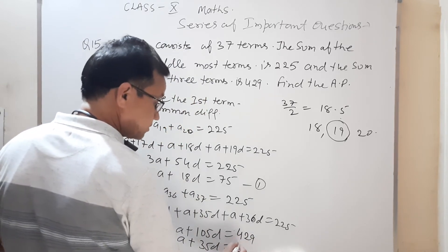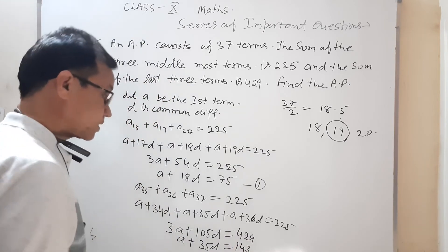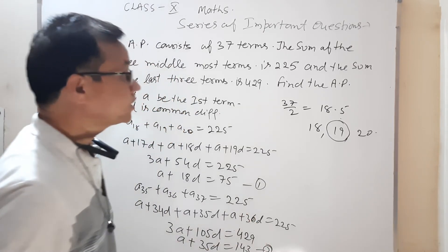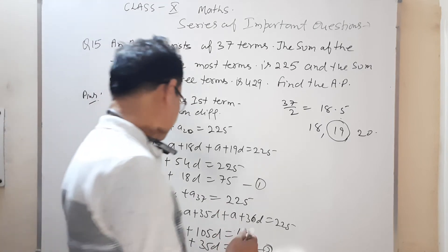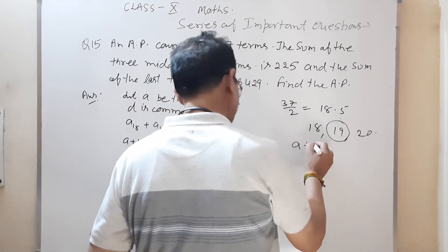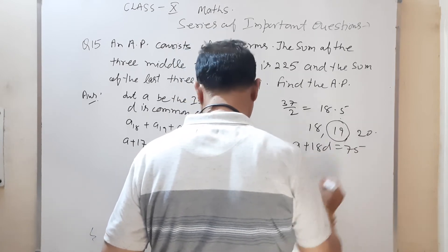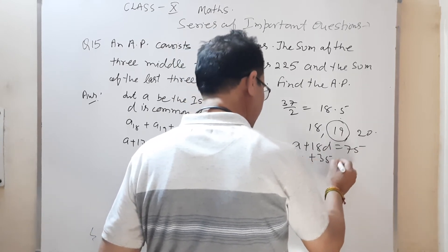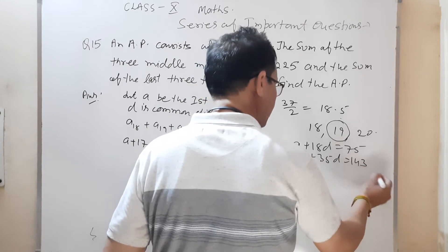तो 3 से divide किया तो 143 आया। यह second equation बनेगा। इससे a और d की value आ जाएगी। हमने लिखा: Equation 1 — a + 18d = 75, Equation 2 — a + 35d = 143।